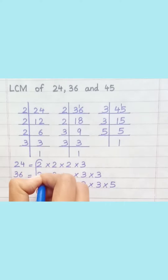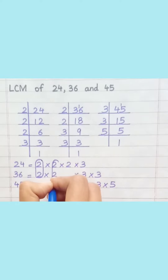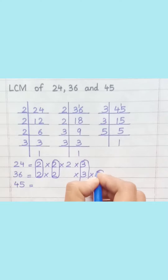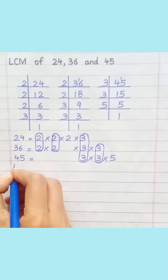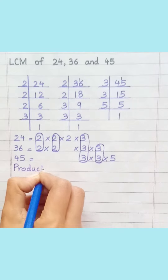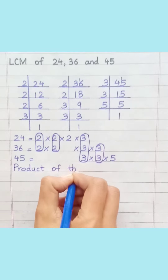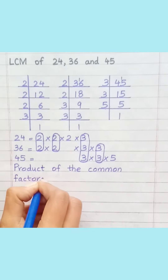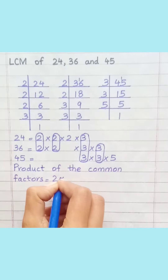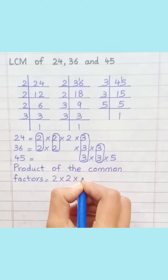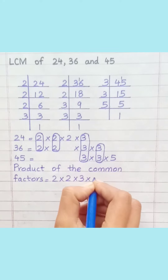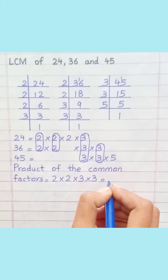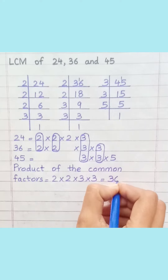Loop the factors that are common to all of the given numbers. Product of the common factors: equal 2 multiply 2 multiply 3 multiply 3, equal 36.